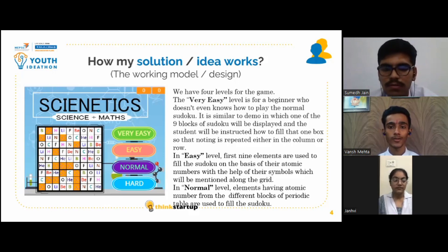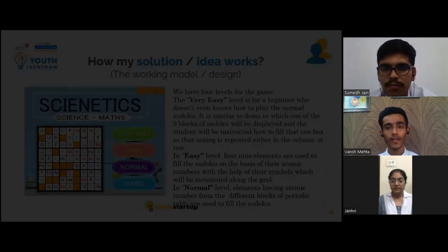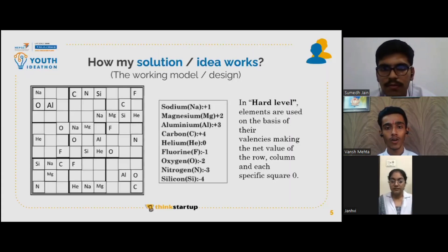In the hard level, elements are used on the basis of their valencies, making the net value of each row, column, and specific square equal.